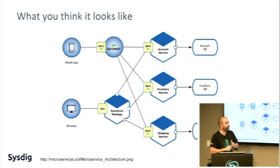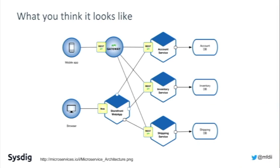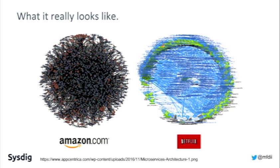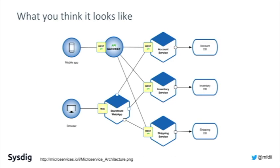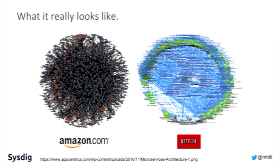What you think a microservices architecture looks like is something with different clients coming in from different endpoints, API gateways, and distinct services. But in reality, the situation is probably something more complex — when you actually drill down into the components you have running this architecture diagram, behind each one of these services there might be hundreds or thousands of containers.